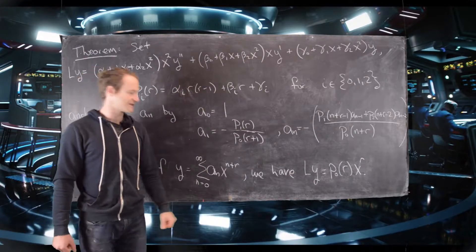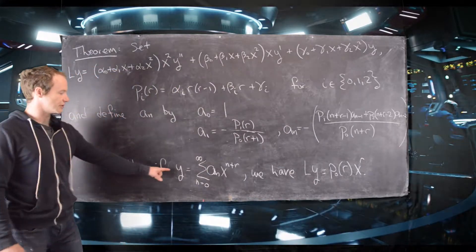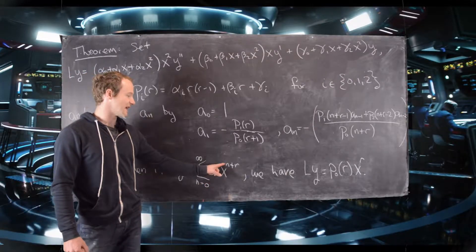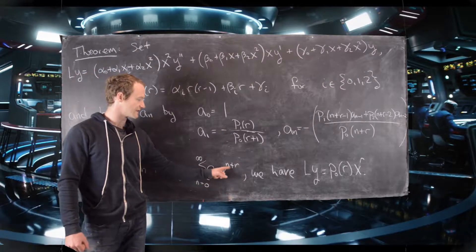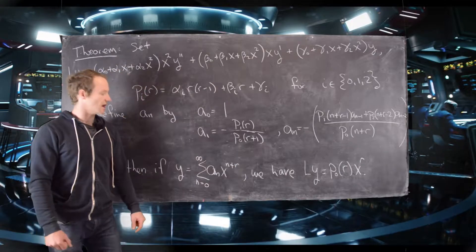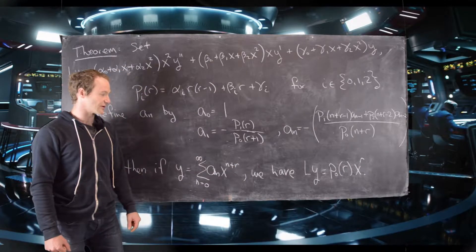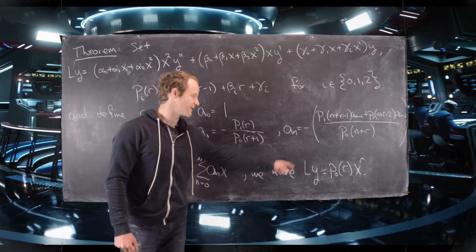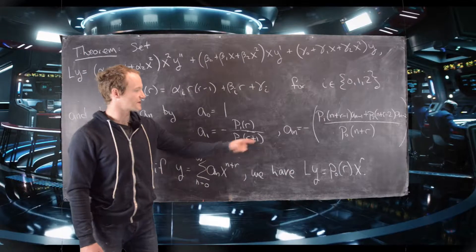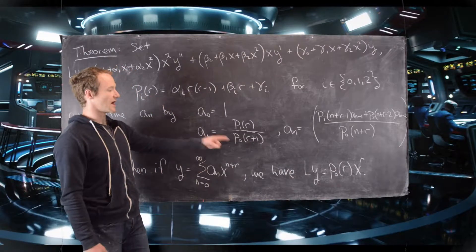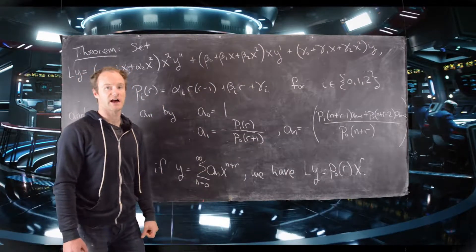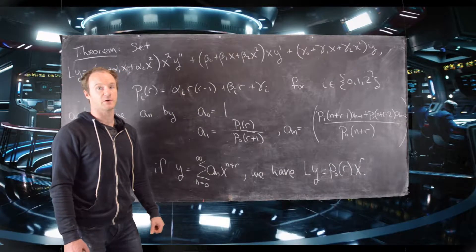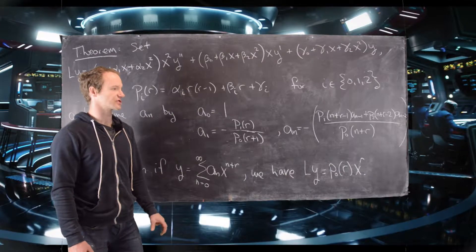With this entire setup, the following is true. If we define a series y as the sum of a_n x to the n plus r — notice we have it offset by this factor of r, so it's not just a normal power series — then the differential operator L acting on y will give us the polynomial p_0 evaluated at r, times x to the r. This is going to help us find Frobenius series solutions to differential equations.